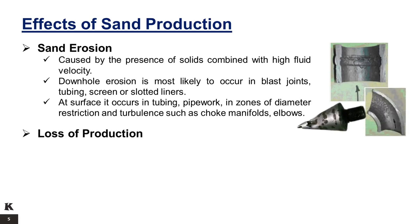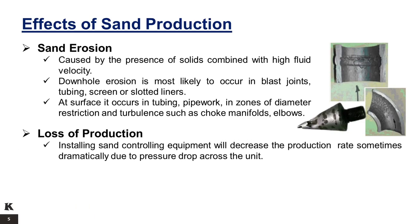Loss of production. Erosion is more severe when sand is produced with gas, or when produced fluids are in turbulent flow. High pressure gas containing sand particles and expanding through a surface choke is the most hazardous situation, due to the associated high velocity. Excessive erosion at this point could lead to a complete loss of well control, therefore loss of production is the most important reason for controlling sand production. Installing sand controlling equipment will decrease the production rate, sometimes dramatically, due to screens with holes close in size to the sand grains, so more friction losses and more pressure drop or depletion is required.